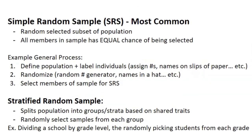The next sampling process is stratified random sample, where you split the population into groups or strata based on shared traits — basically homogeneous groups. For example, I could split viewers into PrepWorks subscribers and non-subscribers, and then randomly select samples from each group. If I had 10 subscribers and 10 non-subscribers, I'd randomly select, say, two people from each group, where everyone in that group has an equal chance of being selected.